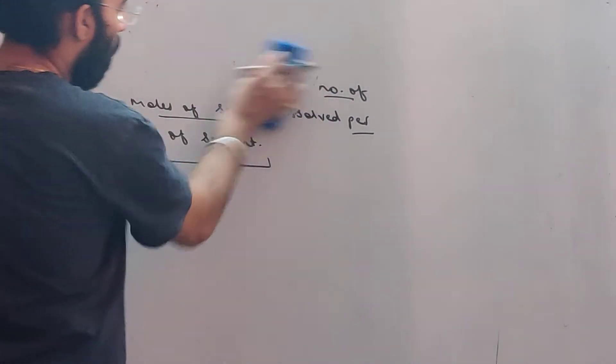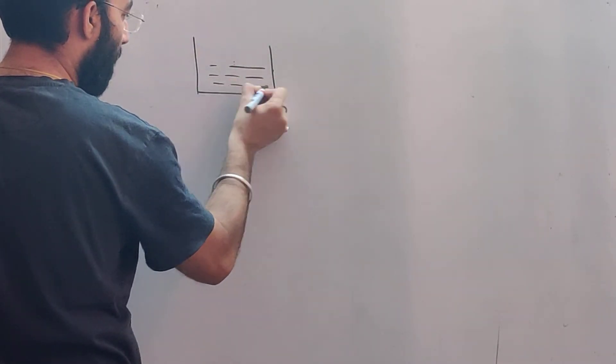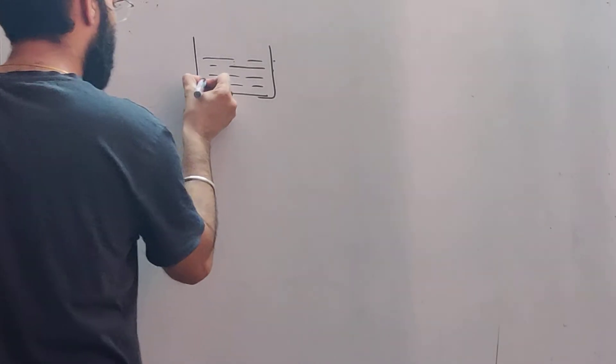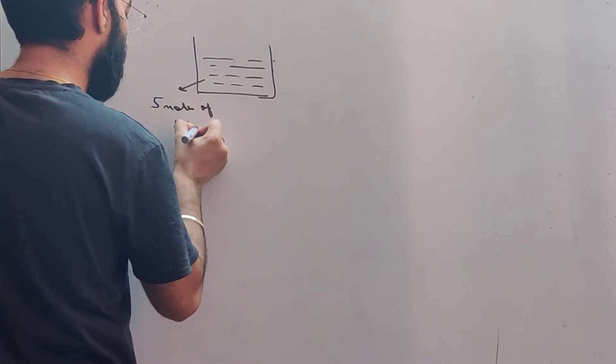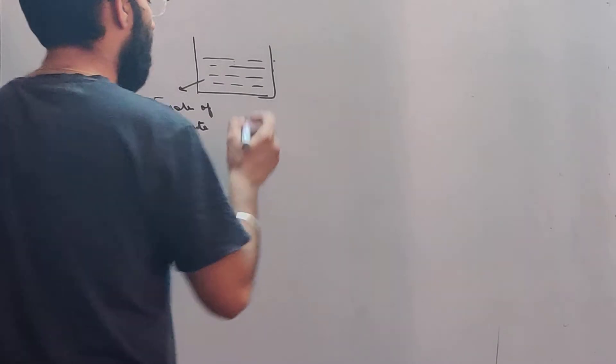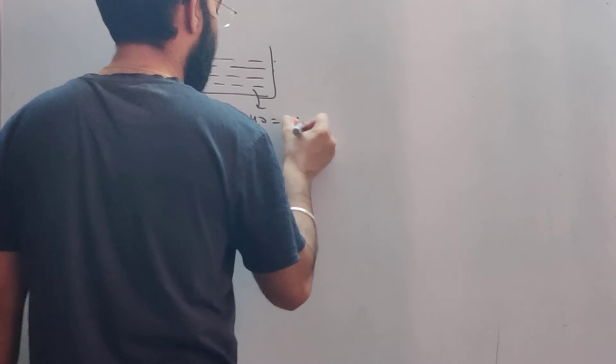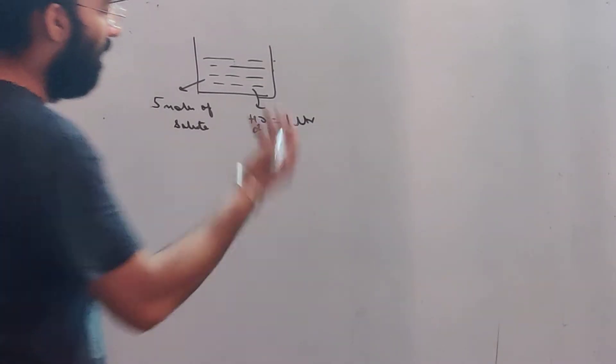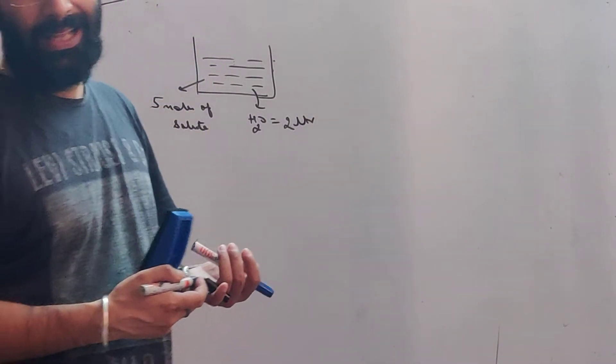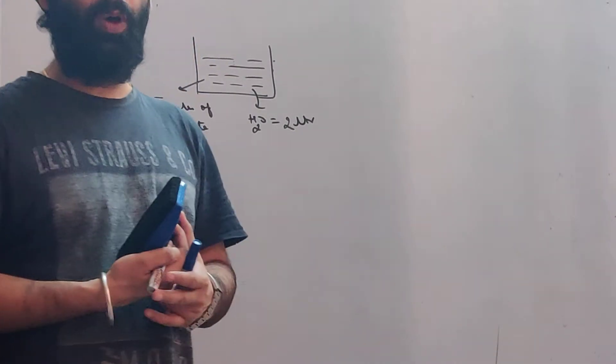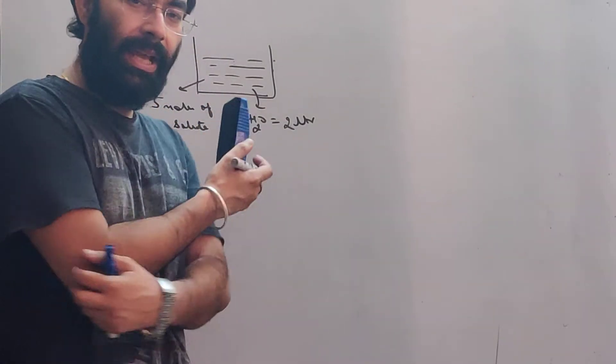Now this is a little detail. Suppose this is some solution with me. Here 5 moles of solute are there, 5 moles of solute. And suppose that there is water here, 1 liter, 2 liter. This is only 2 liter, this is only a volume of water. So the weight of water is in kilo, and the liquid is in kilo.